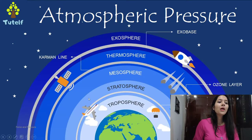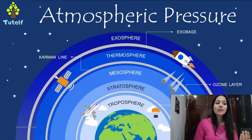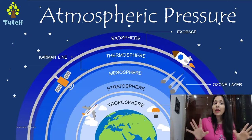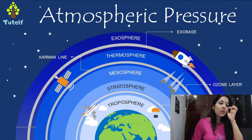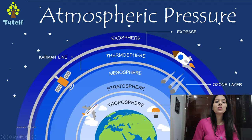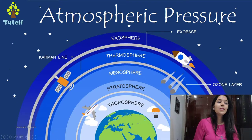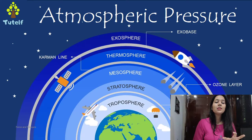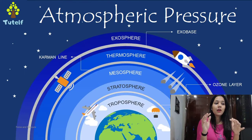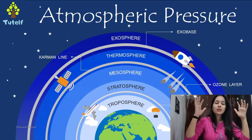Atmospheric pressure is the air pressure exerted by the weight of the air present in the atmosphere. On the screen you can see there is the troposphere, stratosphere, mesosphere, thermosphere, and exosphere. Atmospheric pressure is due to the weight of the air present in the atmosphere above us.